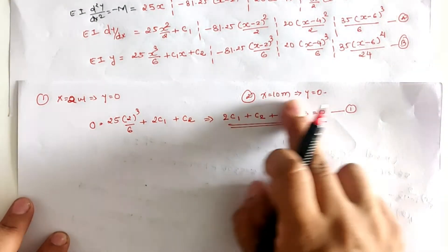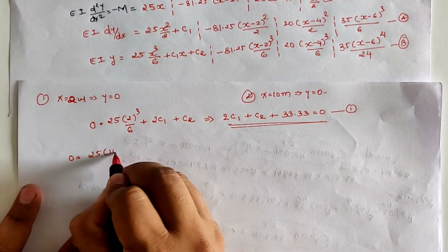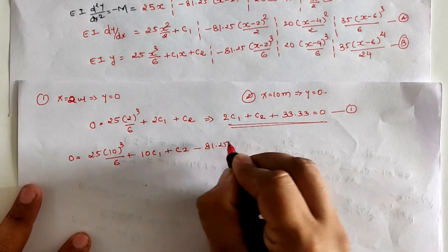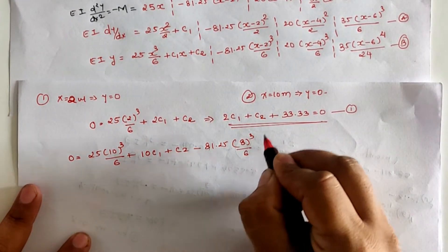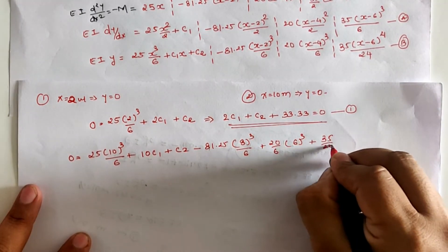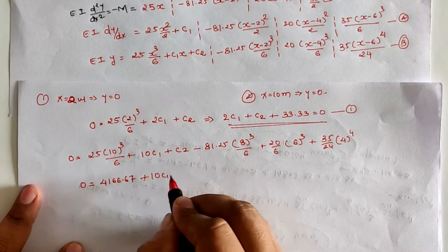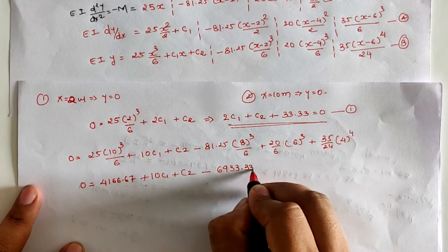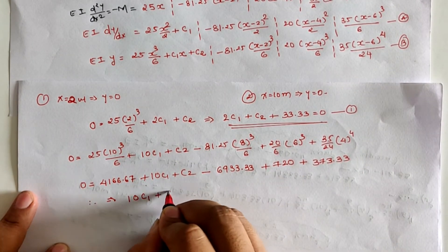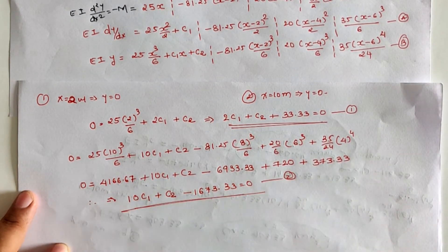Applying the second boundary condition x = 10, y = 0: substituting x = 10 gives 25·(10)³/6 + 10C₁ + C₂ − 81.25·(10 − 2)³/6 − 20·(10 − 4)³/6 − 35·(10 − 6)⁴/24. Here (10 − 2) = 8, (10 − 4) = 6, and (10 − 6) = 4. Solving all terms yields: 10C₁ + C₂ − 1673.33 = 0.